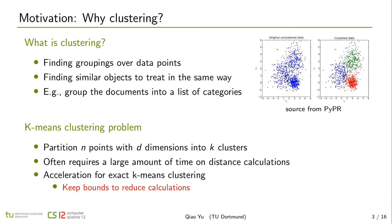And k-means is a widely used clustering method. It aims to partition n points with d-dimensions into k-clusters. But it often requires a large amount of time on distance calculations. So one of the ways to accelerate exact k-means clustering is to keep bounds to reduce calculations.